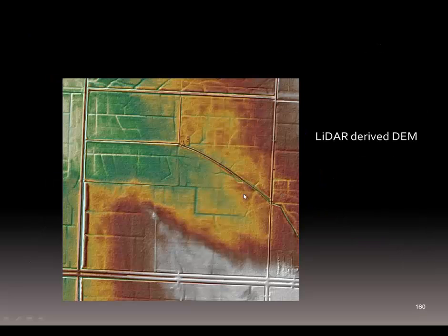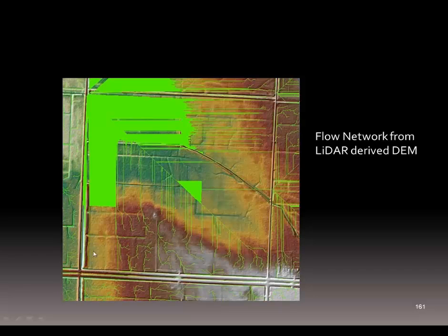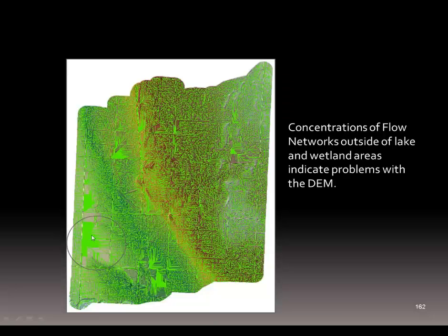There are some problems with this that we want to review. If we've got our LiDAR-derived DEM and calculate flow direction and flow accumulation on the landscape, we can see there's pooling of water that doesn't exist in reality. This has to do with several missing digital dams. On a very small scale basis, you get an idea of where the problems are.